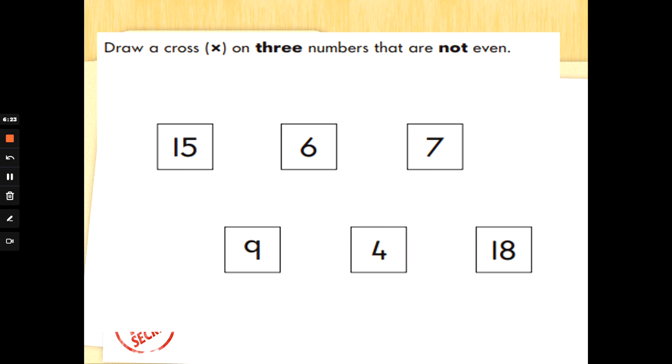Draw a cross on three numbers that are not even. So if a number's not even, it is an odd number. One, three, five, seven, nine—odd numbers make me feel fine. And it's the ones that tell you. So 15 has five ones, not in the two times table. That is an odd number.